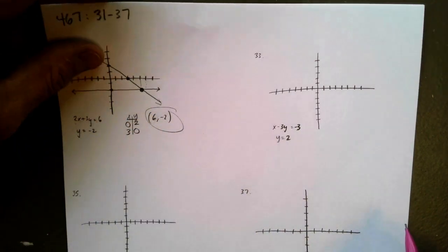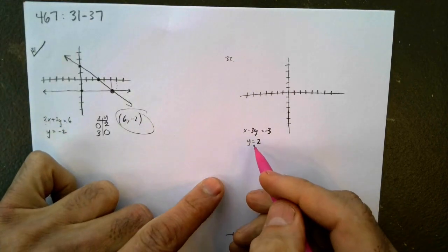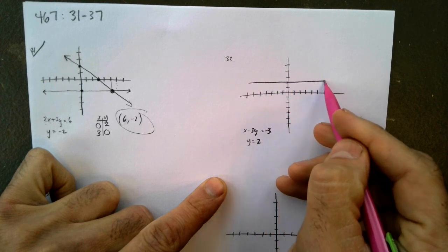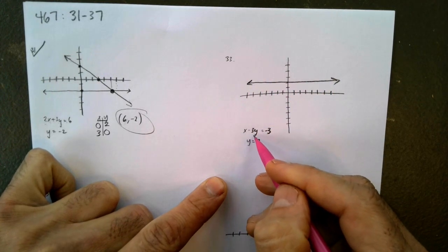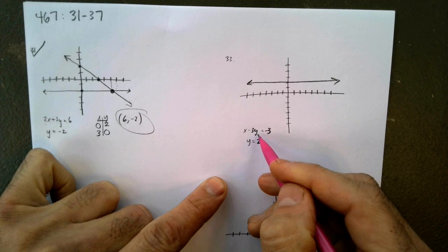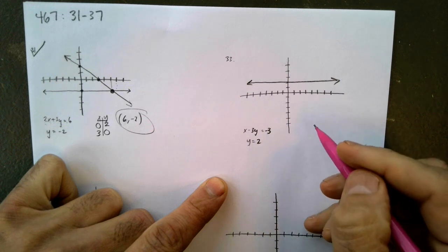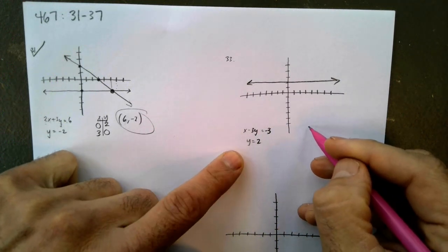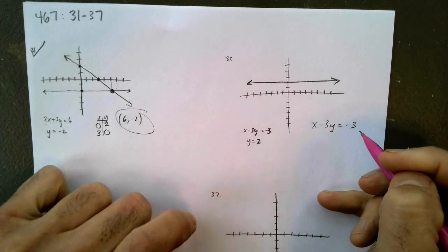All right, 33. Same situation. We're going to go ahead and graph this y equals 2. It's a horizontal line right at 2. Then I'm going to graph x minus 3y equals negative 3. Okay. Well, to do that, let's do the slope intercept this time.